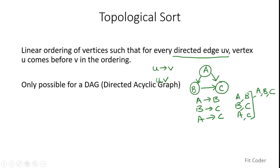An important property of topological sort is that it is only possible for a DAG, or a directed acyclic graph. It must be directed because the definition itself says we need a directed edge from u to v. But why acyclic? Let's take an example.